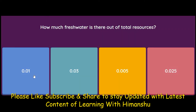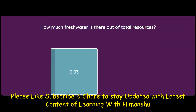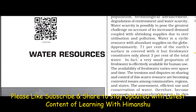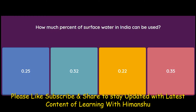How much fresh water is there out of total resources — 1 percent, 3 percent, 5 percent, or 2.5 percent? The answer is 3 percent: fresh water constitutes only about 3 percent of the total water. How much percent of surface water in India can be used — 25 percent, 32 percent, 22 percent, or 35 percent? The answer is 32 percent.